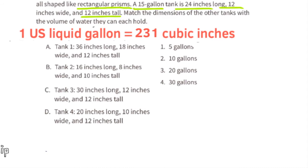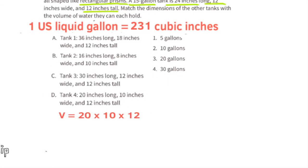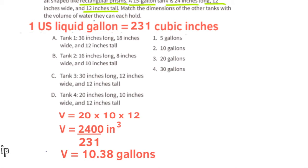Part D. Tank 4: 20 inches long, 10 inches wide, and 12 inches tall. That's 20 times 10 times 12, which equals 2,400 cubic inches. 2,400 divided by 231 equals almost 10.4 gallons. For tank 4, I would go with number 2, 10 gallons.